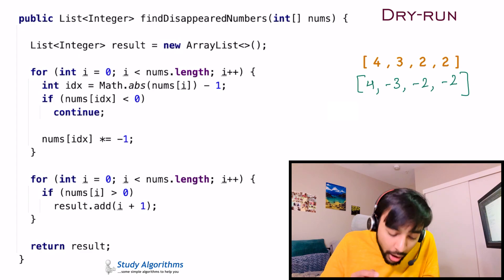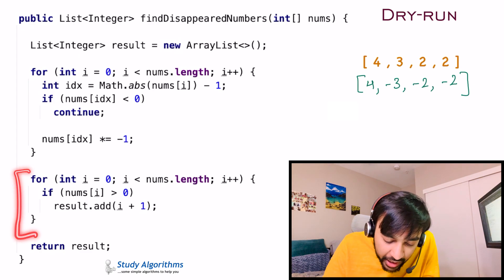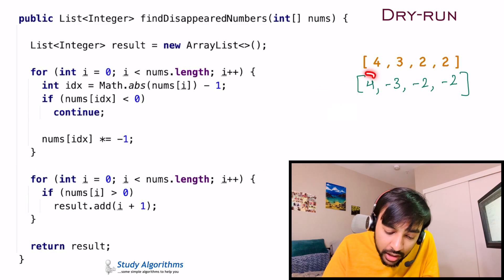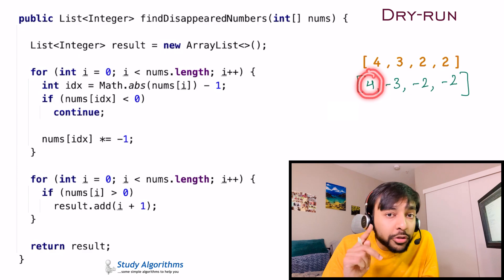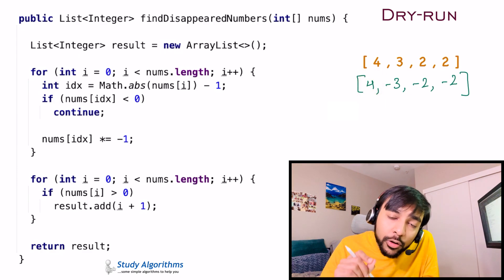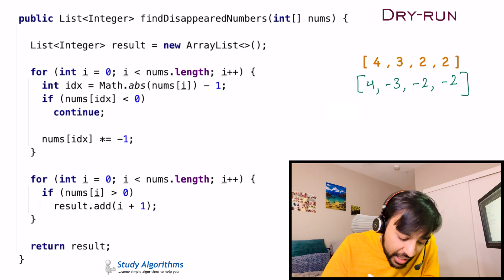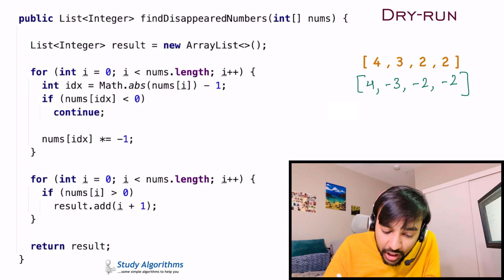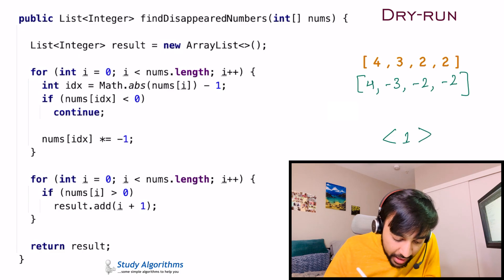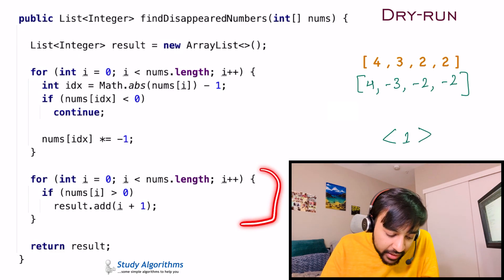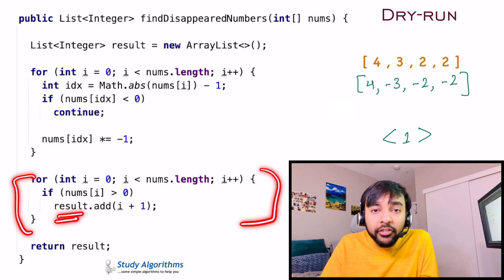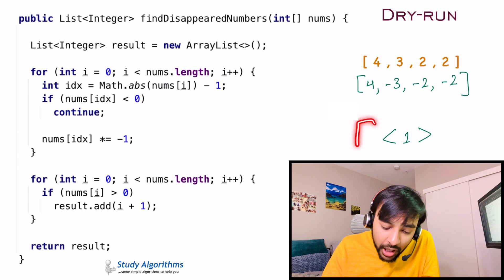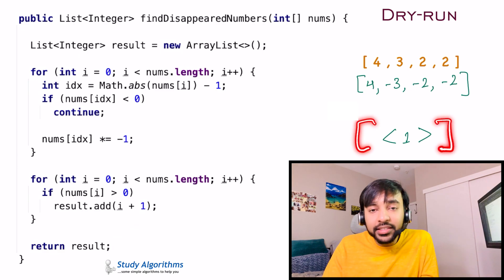Once this is done, all you need to do is you again iterate through your array and look at the element that is not marked. 4 is not marked. So you see its index. Whatever value is not marked, just take that index and add it to your result set. So currently, I will add 1 to my result set. So once this loop ends, this result set will contain all your disappearing numbers. And at the end, you return this result. So I will return this list as my answer.